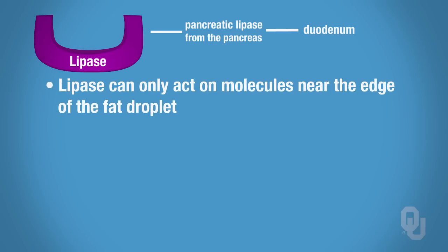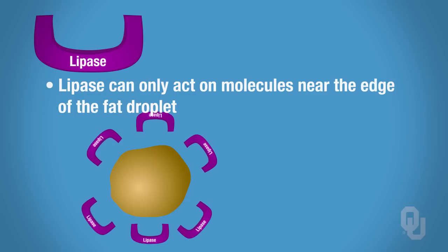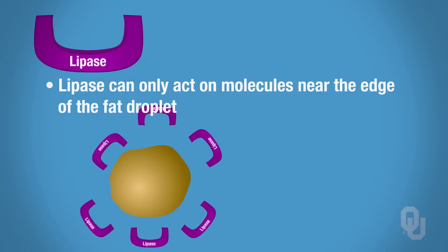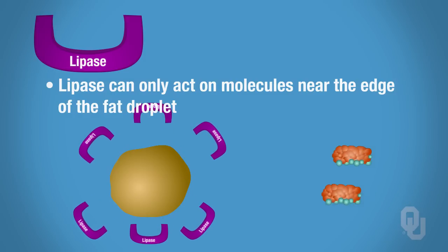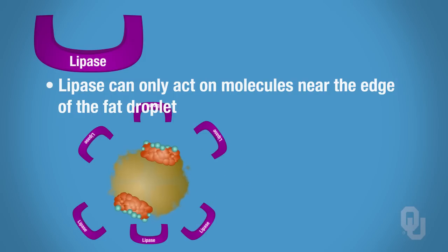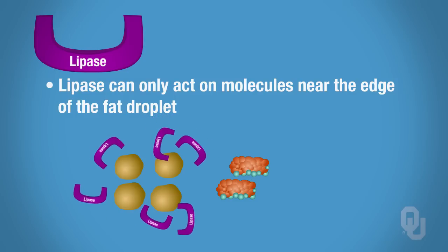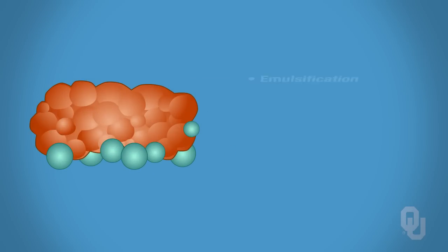Lipases only act on molecules near the edge of the fat droplet. So if you have a large fat droplet and lipases are only acting near the edge, it's going to take a very long time to break down that fat. What we have to aid with lipid digestion are bile salts. Bile salts take this very large fat droplet and break it down into smaller droplets, increasing the surface area so that enzymes have a lot more surface area to digest the lipid. This process is called emulsification.